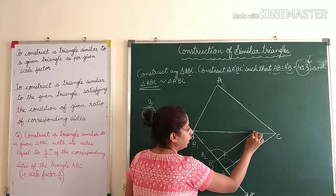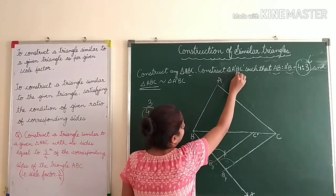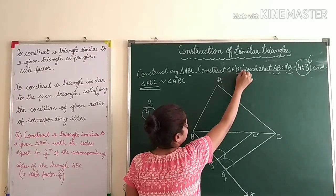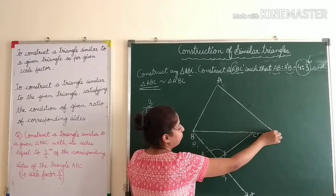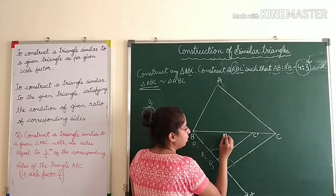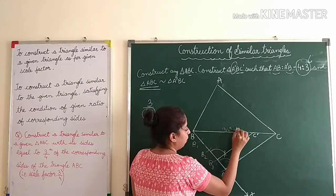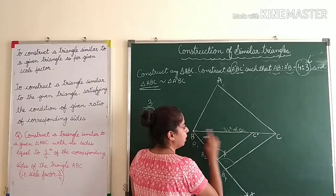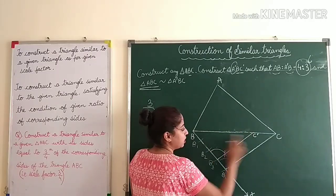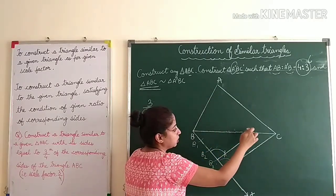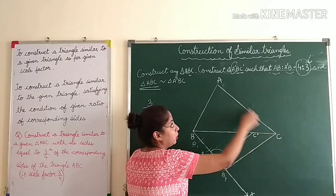So now I have point C'. I have B and C'. This line BC' is three-fourths of BC — so we have obtained three-fourths of BC. Now we want to find A'. From C I will draw a line parallel to AC.